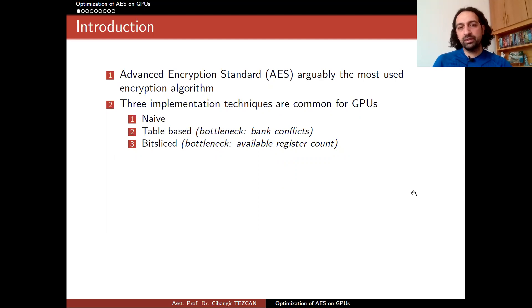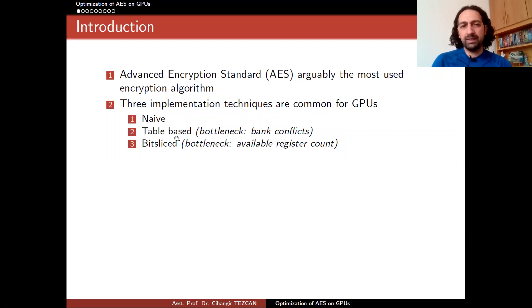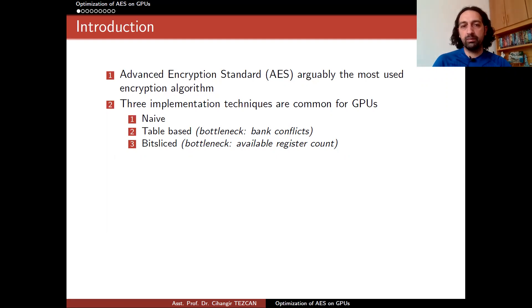In the table-based implementation, AES has a 128-bit block size, which is 16 bytes. We pre-compute results of every possible byte, which are in 16 different tables. This turns one round of the cipher into 16 table lookups and 16 XORs. But in GPUs, there's a bottleneck: when two different threads try to reach the same shared memory bank, it causes a bank conflict. The fastest memory type on GPU is shared memory, which is why we keep the tables there, but bank conflicts provide a bottleneck.